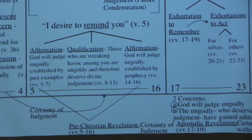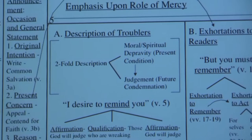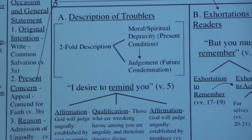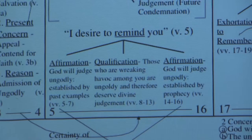The subunits in the address found in verses 5 through 23 are: verses 5 through 16, the description of the troublers, these ungodly; and then verses 17 through 23, the exhortations or the appeal to the readers. That's really as far as you would need to go in terms of identifying units and subunits.